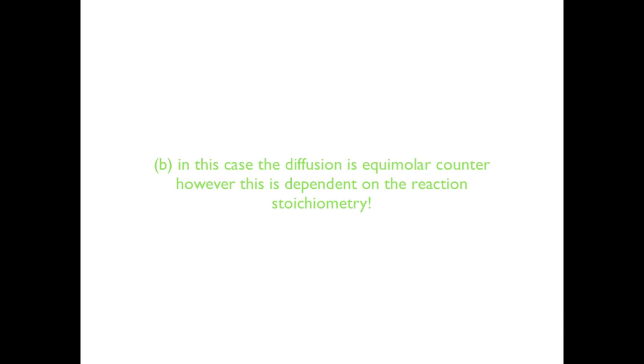Part B is easily answered. The diffusion is equimolar counter diffusion because for every mole of CO2 that diffuses away from the surface, one mole of O2 must diffuse back so the reaction proceeds at steady state. This is dependent on the reaction stoichiometry. If the relationship was not 1:1, we would not see equimolar counter diffusion.